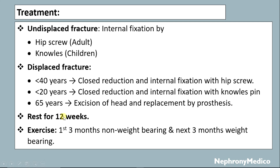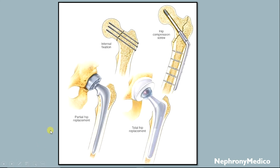Rest for two weeks and exercise should follow: the first three months consist of non-weight-bearing exercises, and the next three months involve weight-bearing exercises. This picture shows partial hip replacement or total hip replacement in adults, and internal fixation with hip compression screw for different age groups.